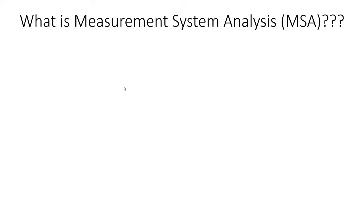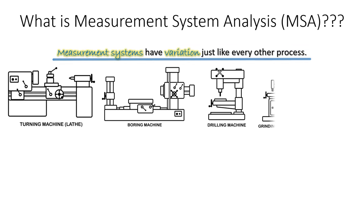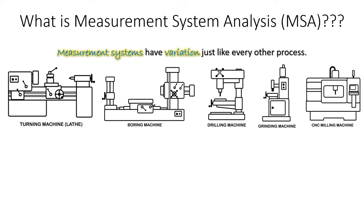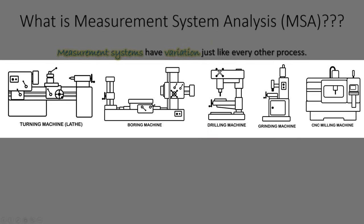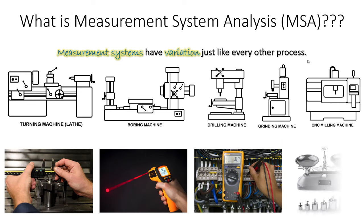So what is measurement system analysis? Measurement systems — think about the systems you use: calipers, micrometers, weigh scales, CMMs — whatever measurement system you use, all measurement systems have variation just like every other process. Oftentimes, as green belts, black belts, or quality engineers, we get hyper-focused on the process that produces our product — turning machines, drilling machines, CNCs, molding equipment — and we tend to forget that the way we take measurements can also introduce variation into our data set.